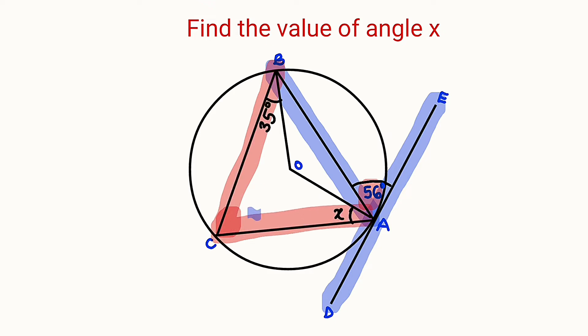So this is the angle subtended by that chord to the circumference, which is this. It must be equal to 56. So this angle right here is 56.